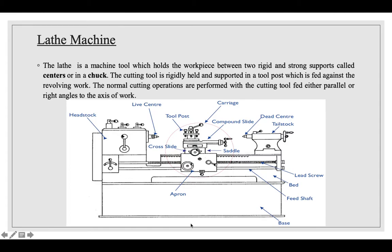This figure shows a lathe machine. The work is held between two centers — the live center and the dead center. The workpiece rotates normally and a cutting tool is fed into it. The cutting tool is held on the tool post, which is mounted on a carriage. The tool post rests on a compound slide and then a cross slide, which provide different motions. The tool is fed either parallel or at right angles to the axis of the workpiece.